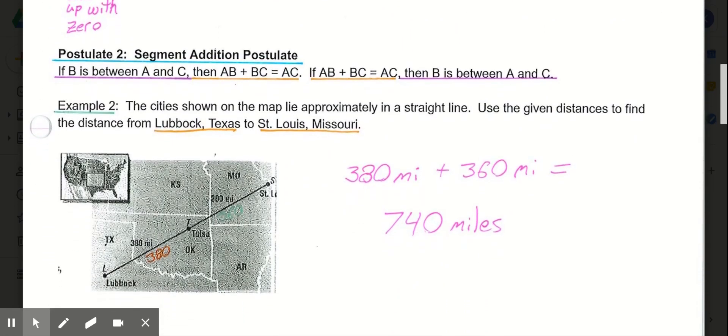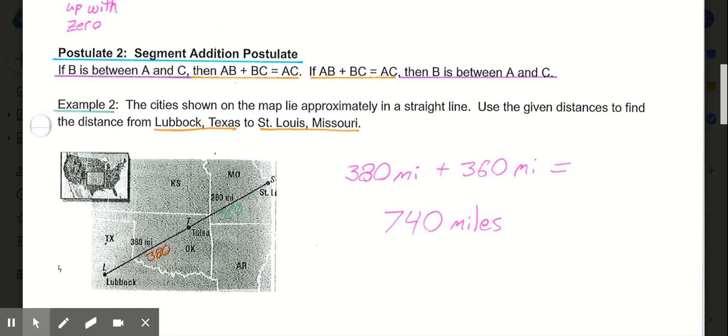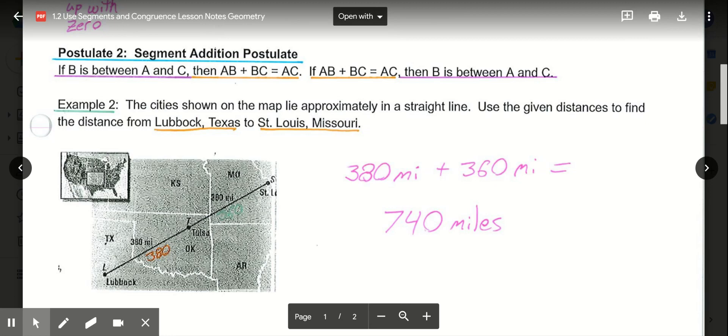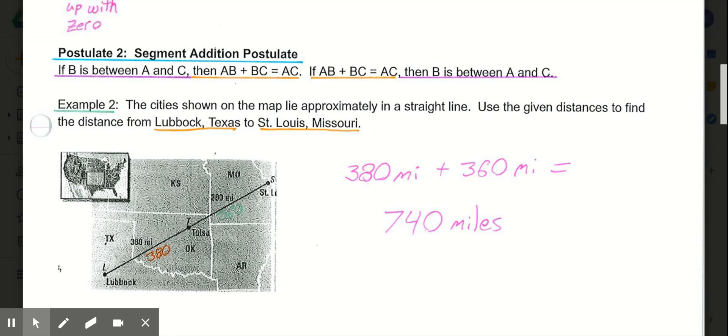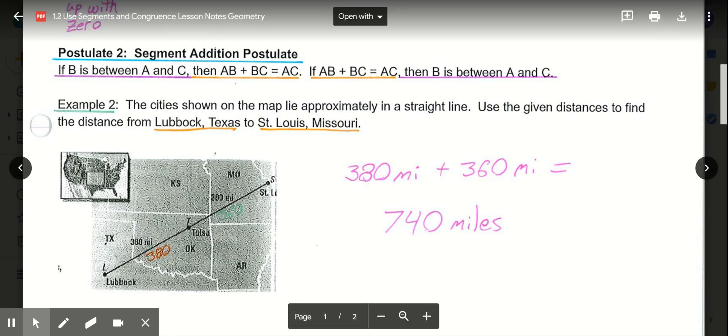Then our second postulate, the segment addition postulate. So the segment addition postulate says, if we're dealing with three points, points A, B, and C, if B is between A and C, and we're assuming these are all on the same segment, so they're all collinear, meaning on the same line. So if B is between A and C, then segment AB plus segment BC equals the segment of AC.